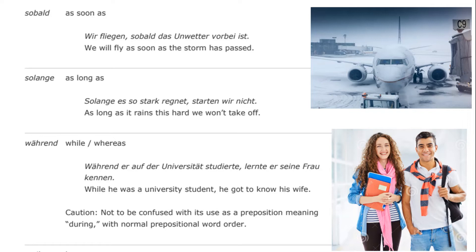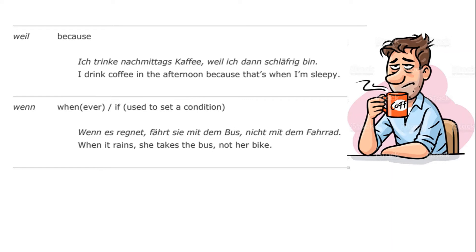"Sobald" means "as soon as": "Wir fliegen, sobald das Unwetter vorbei ist" — we'll fly as soon as the storm has passed. "Während" means "while" or "whereas": "Während er auf der Universität studierte, lernte er seine Frau kennen" — while he was a university student, he got to know his wife. Caution: this is not to be confused with its use as a preposition meaning "during," which will give you the normal prepositional word order.